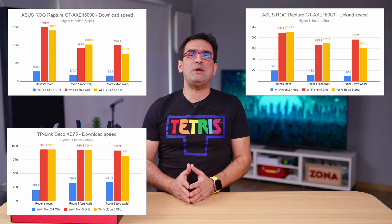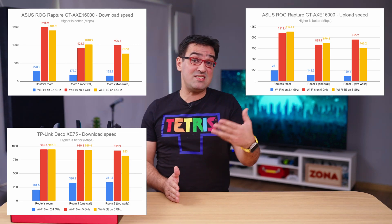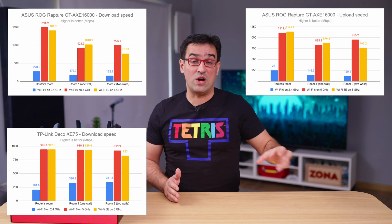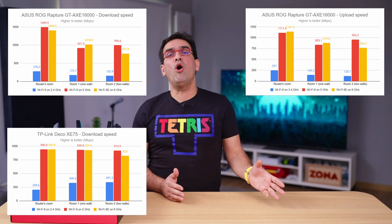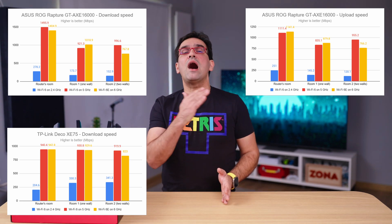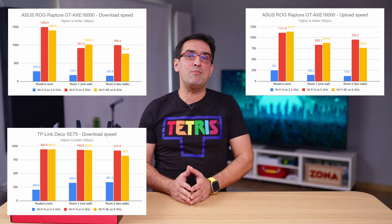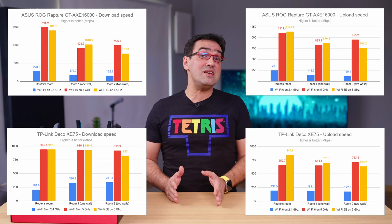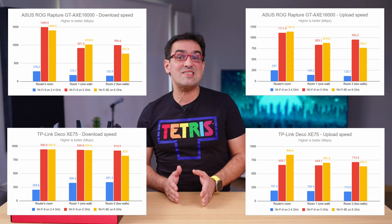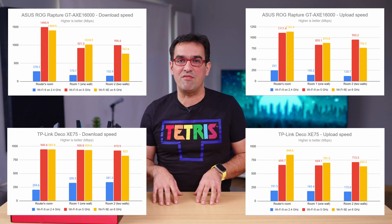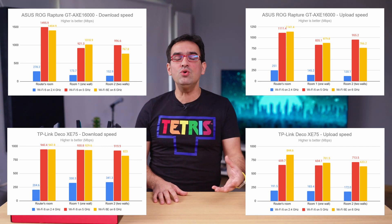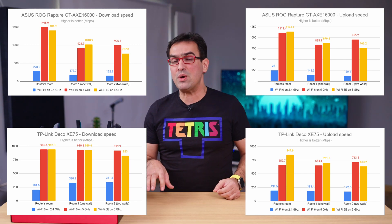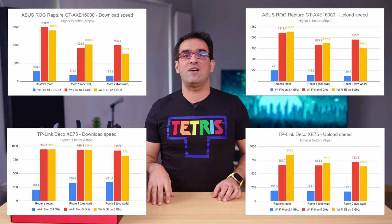We repeated the same speed measurements using the Deco. Again, Wi-Fi 6e was marginally faster only in the room where the main unit of the Deco was placed. However, in all the other rooms, Wi-Fi 6 outperformed 6e, especially when moving further away from the main station. When measuring the upload speed, Wi-Fi 6e was faster than Wi-Fi 6 in rooms where the 6 GHz band had great coverage. However, in Room 2, Wi-Fi 6 again benefited from the larger coverage area of the 5 GHz frequency band and delivered faster uploads.